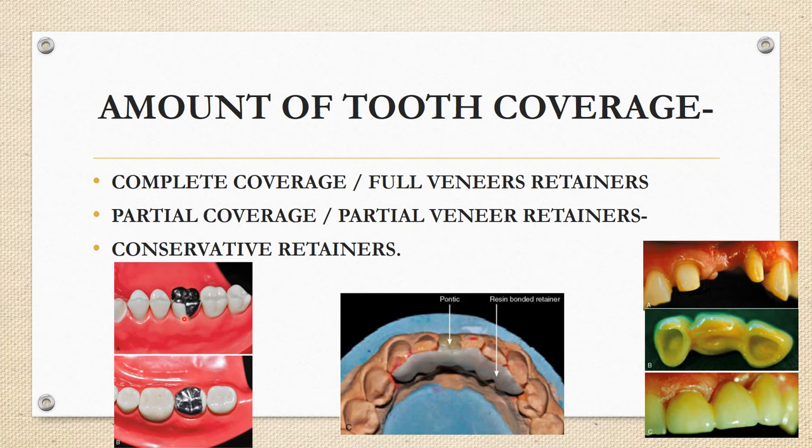Partial veneer retainers can be termed based on how much surface area is covered — they can be three-quarter crowns, four-fifth crowns, or seven-eighth crowns. These names indicate how much area or how many surfaces are covered. The next type is conservative retainers.